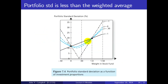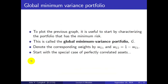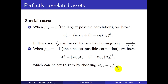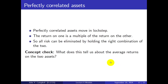Going back to the figure: in the rho equals 1 case there's a straight line and we can hit zero risk with a negative weight. In the rho equals minus 1 case, we use positive weights for both assets and achieve zero standard deviation. When correlation is perfectly negative, all risk can be eliminated by holding the right combination of the two assets since the return on one is effectively a multiple of the other. As a concept check, think about what this tells us about the average returns on the two assets — think about arbitrage opportunities.